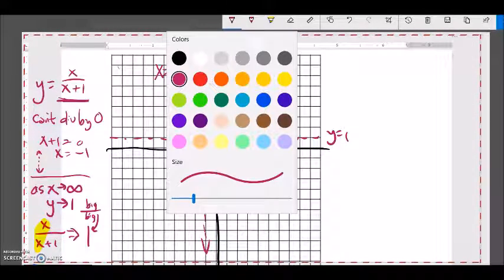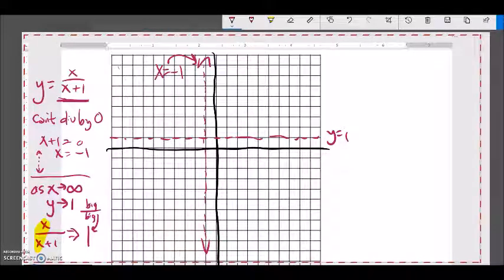And now, taking a look at this graph, I can tell it's probably going to have a y-intercept, probably going to have an x-intercept as well. So, let me see if I can find those.